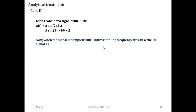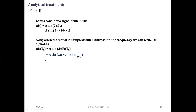When the signal is sampled with 100 Hz sampling frequency, we write its discrete time version as x(nTs) = A sin(2π F nTs), replacing small t with nTs. Substituting capital F = 90 and Ts = 1/100, we get x(nTs) = A sin(2π × 90 × n × 1/100), which simplifies to A sin(2π × (9/10) × n).